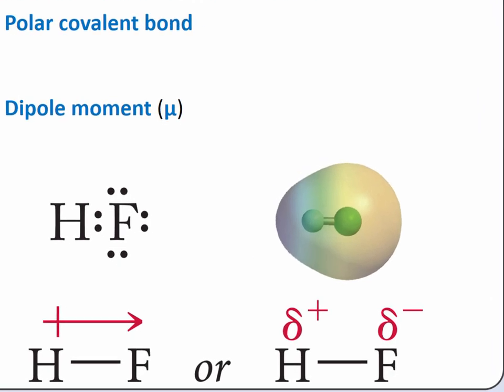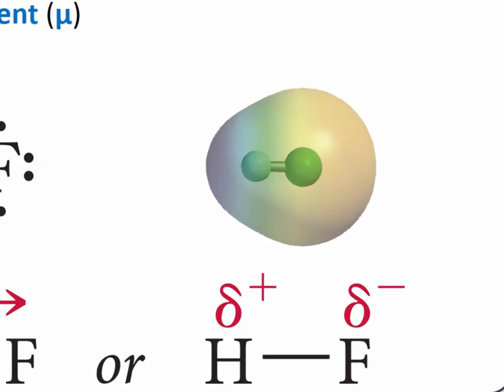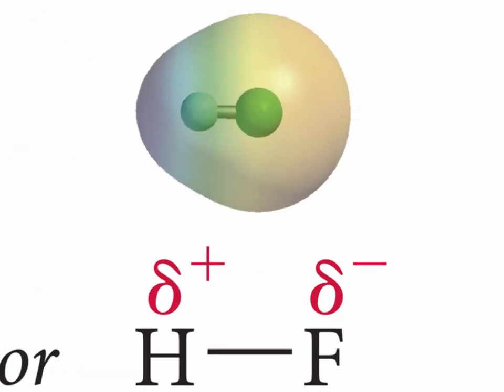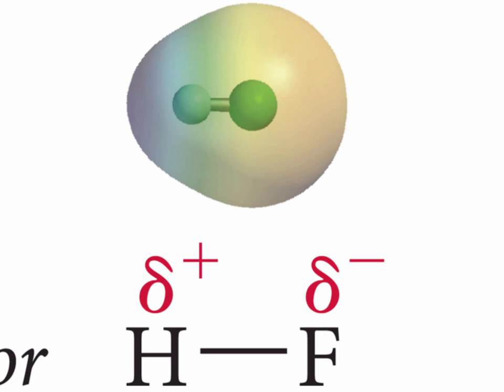We can see this by looking at the electrostatic potential map for HF. Areas that are blue have relatively low electron density in the molecule. Areas that are red have relatively high electron density. The hydrogen side of the molecule is blue, and the fluorine side of the molecule is red.